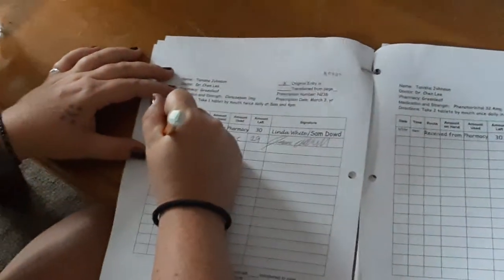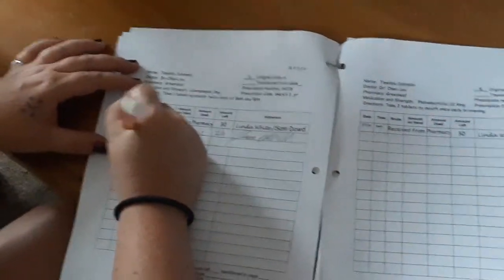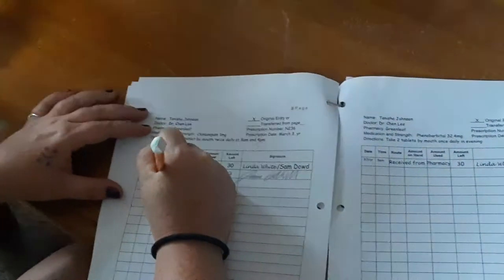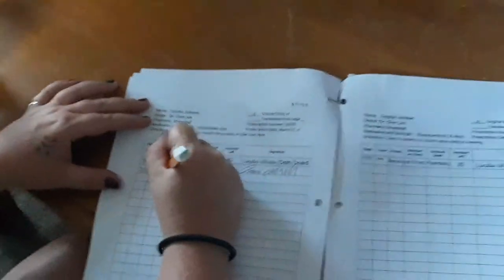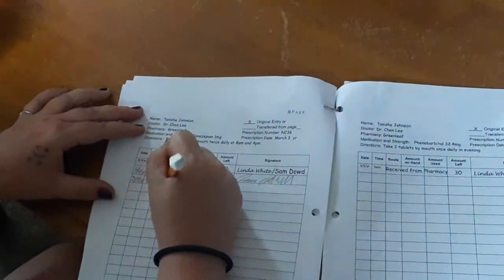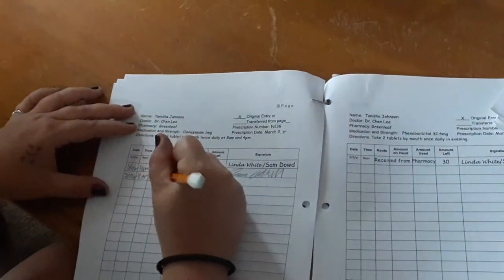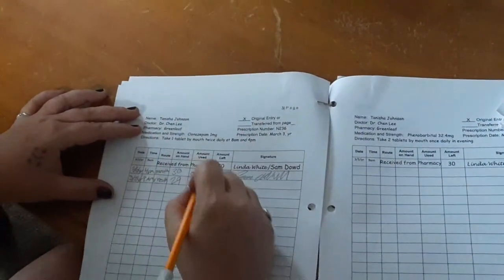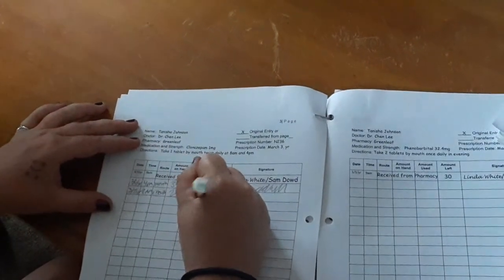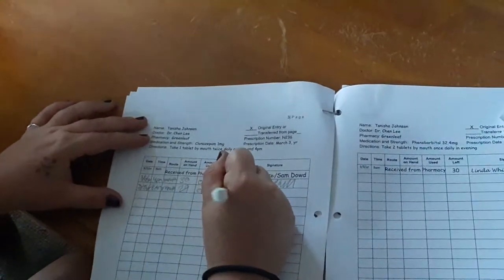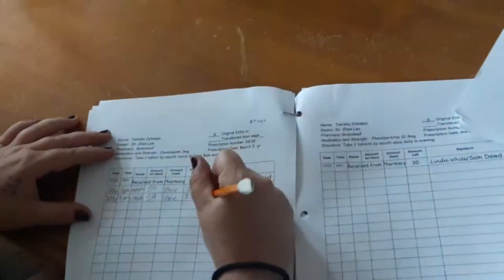Now I record the medication that I used in the count book. Today is 3-7 at 8 a.m. The route is by mouth. The amount on hand was 29. The amount used was 1. The amount left is 28. And I sign my signature.